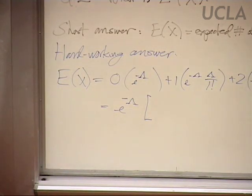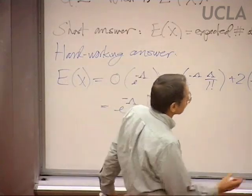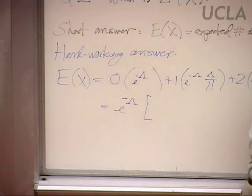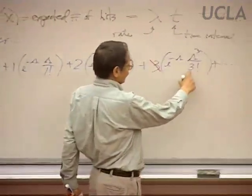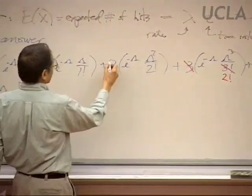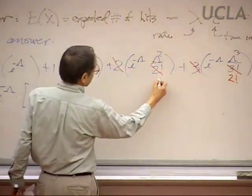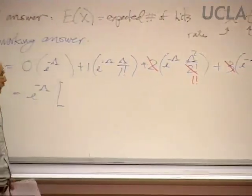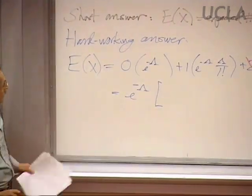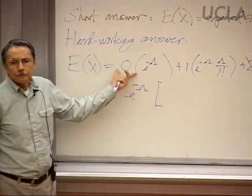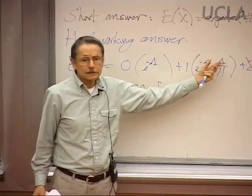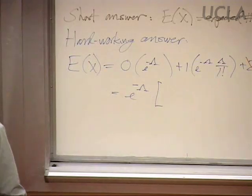Some things simplify. For example, this three cancels with the three hidden in three factorial: instead of three times two times one, we're left with just two times one. Instead of two times one, we just have one. The first term is zero, so we don't have to pay much attention to it. Each remaining term has a factor of lambda, so let's factor that out as well.